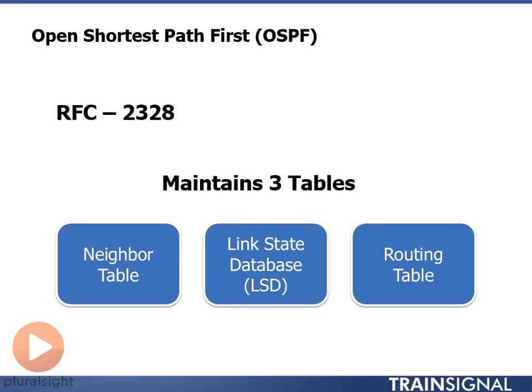We take the Link State Database and run an algorithm against it called Dijkstra's algorithm, or the Shortest Path First algorithm, and that builds the routing table. So let's take a look at how these three tables are built.